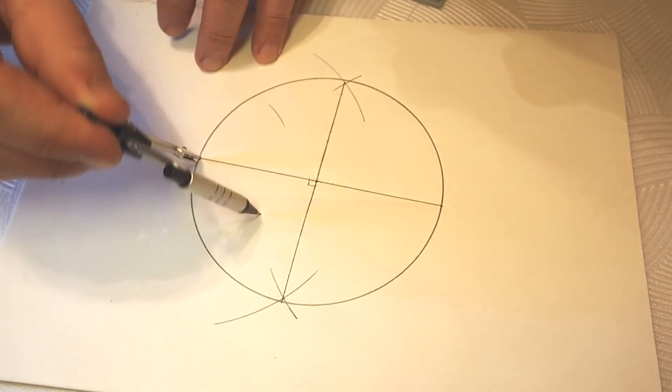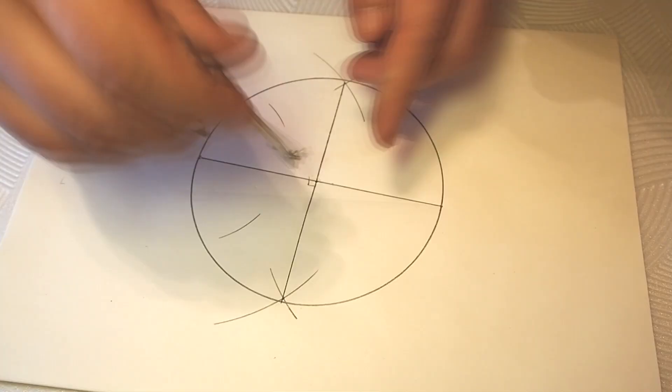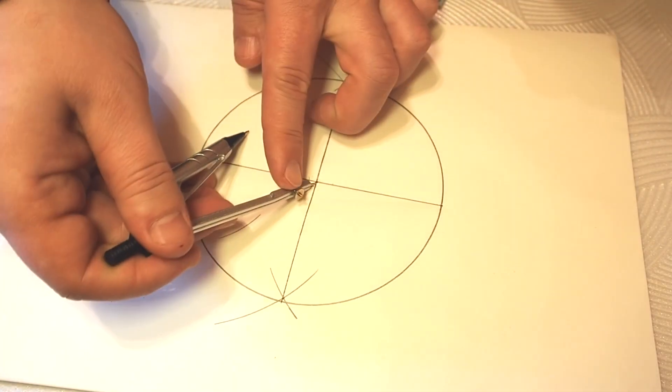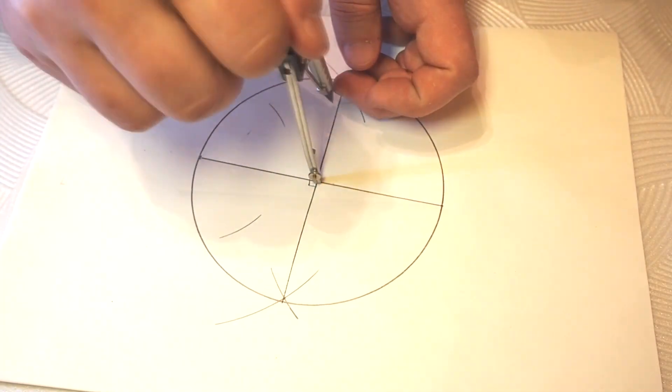We now have two circles crossing each other and forming two points. That's right.